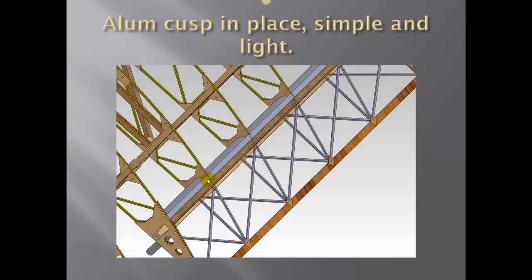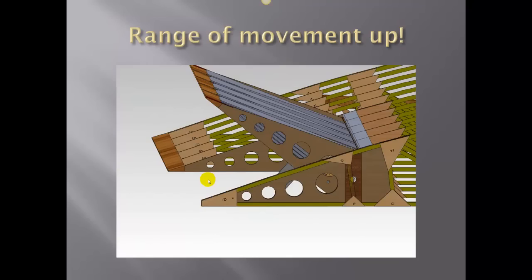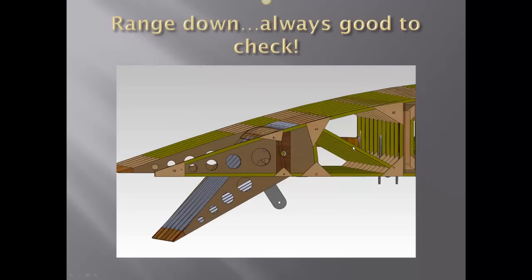Always good to check the range of movement. Here we've got it all the way up, check for binding in this location. And here we have it not all the way down but far in excess of what we're going to need. Got the torque arm shown here from the far end and of course all of the ribs.